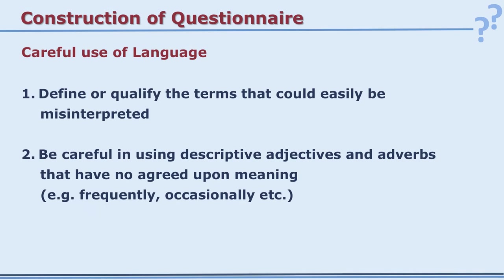The most important aspect of a questionnaire is its language. When you send the instrument to respondents, you are not there to explain every word. If it is misinterpreted or wrongly understood, the researcher is not there to correct it. So language must be used very carefully. First, define and qualify terms that could easily be misinterpreted — for example, 'mass media': does it include newspaper? Is your mobile a mass media? Such terms should be clearly explained.